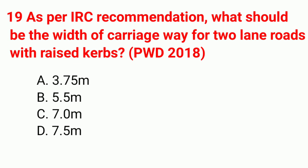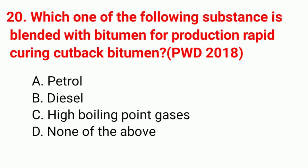Question 19: As per IRC recommendation, what should be the width of carriageway for two-lane roads with raised kerb? Correct answer option D: 7.5 m. Question 20: Which substance is blended with bitumen for production of rapid curing cutback bitumen? Correct answer option A: petrol.